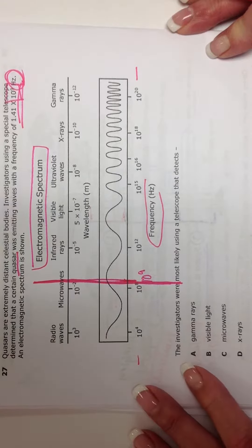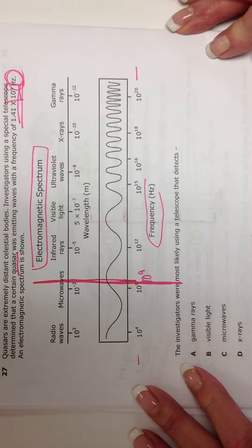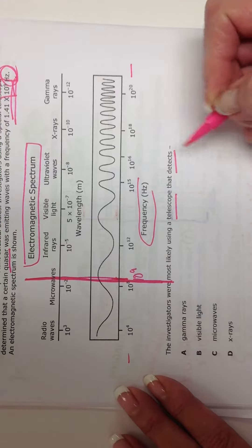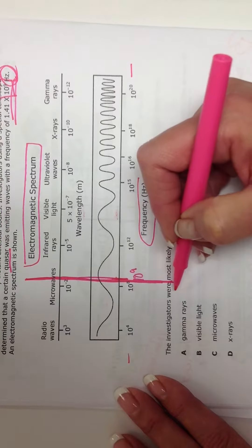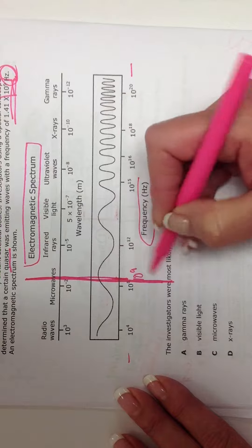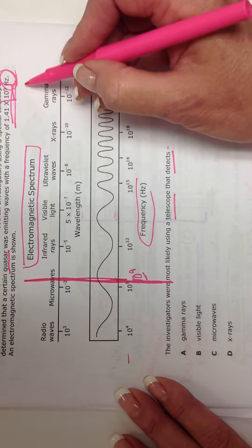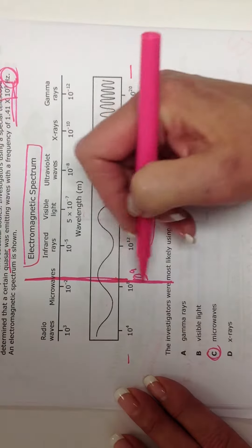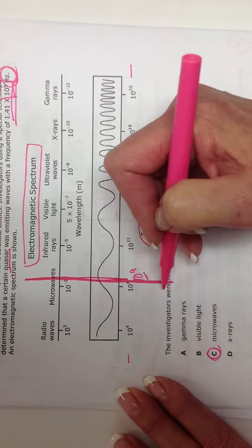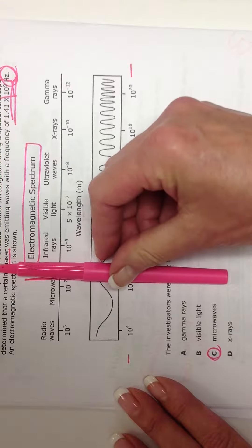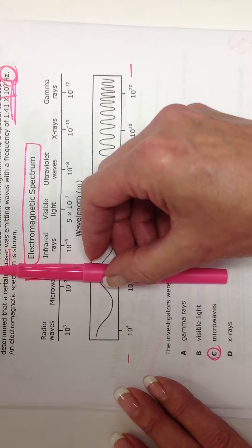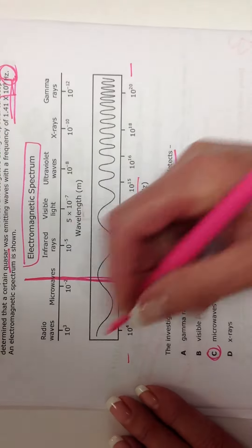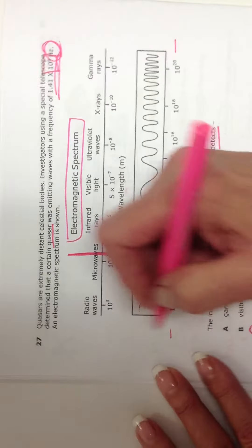All right. The investigators were most likely using a telescope that detects what? Well, this telescope has to detect something in this frequency, right, in this range, because it says 10 to the 9 hertz. So it's got to be in here somewhere. And so they had to be using something that detects microwaves, because that's where I'm at when I go all the way across the electromagnetic spectrum information diagram. So we're going to go with answer choice C.